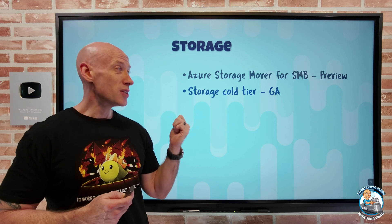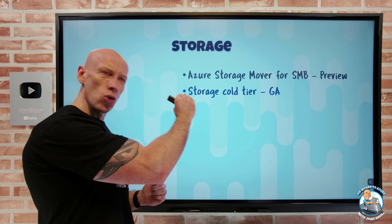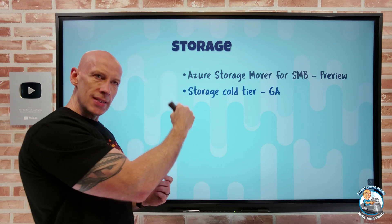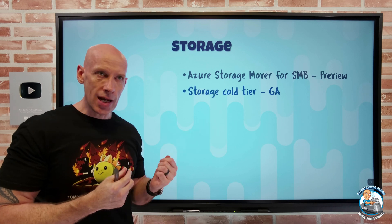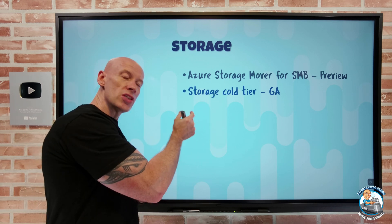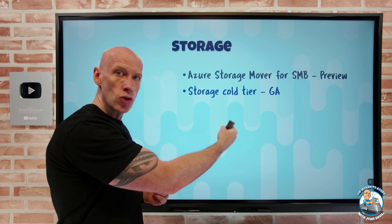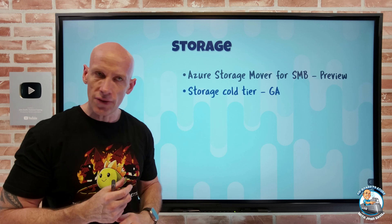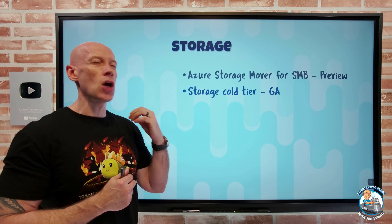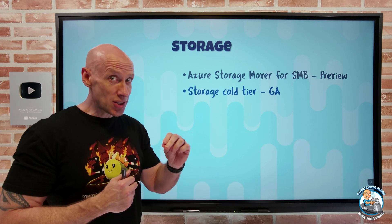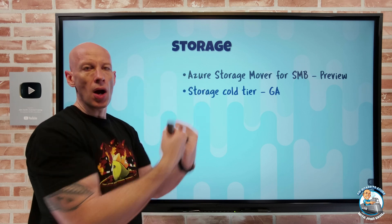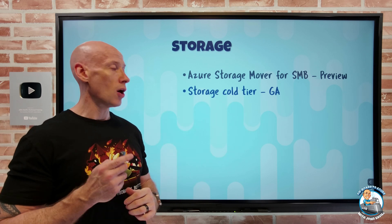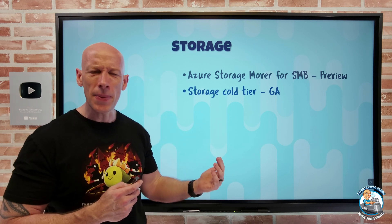Azure Storage cold tier has gone GA. We're used to the idea of the hot tier, the cool tier, and then archive — where archive is essentially offline and I can't access the data. As we move down the tiers, it gets cheaper to store but more expensive for the transactions. Now we have this new cold tier, which is even cheaper than cool, but I pay more for transactions. There's a minimum of 90 days I need to retain the data in that cold tier or I pay an early deletion fee. It's a great fit when I really don't intend to access the data, but if I do need to, I can't wait for the time to hydrate it back from archive. It works with all the normal lifecycle management capabilities.